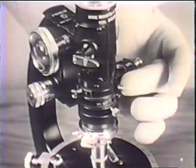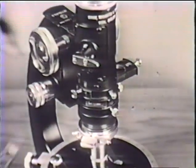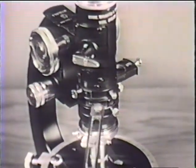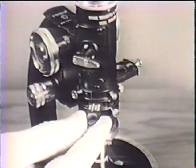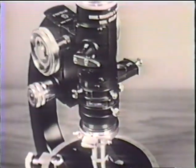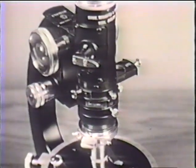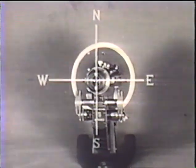Just below the analyzer, there are slots in the tube for the insertion of prepared crystal plates called compensators. The eyepiece is provided with cross lines which are parallel with the vibration directions of the polarizer and analyzer. That is, east-west and north-south.